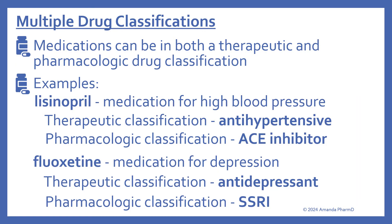So now we'll talk a little bit about how drugs can be in multiple classifications. Medications can be in both a therapeutic and pharmacologic drug classification. For example, lisinopril is a medication for high blood pressure. Its therapeutic classification would be an antihypertensive and its pharmacologic classification would be an ACE inhibitor. Another example is fluoxetine, a medication for depression. Its therapeutic classification would be an antidepressant and its pharmacologic classification would be an SSRI, which stands for selective serotonin reuptake inhibitor. The pharmacologic classification tells the mechanism of action, whereas the therapeutic classification just tells what it's doing.